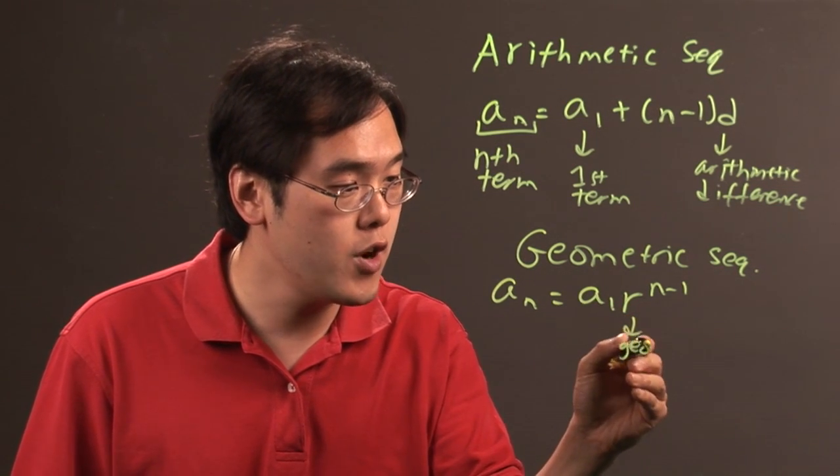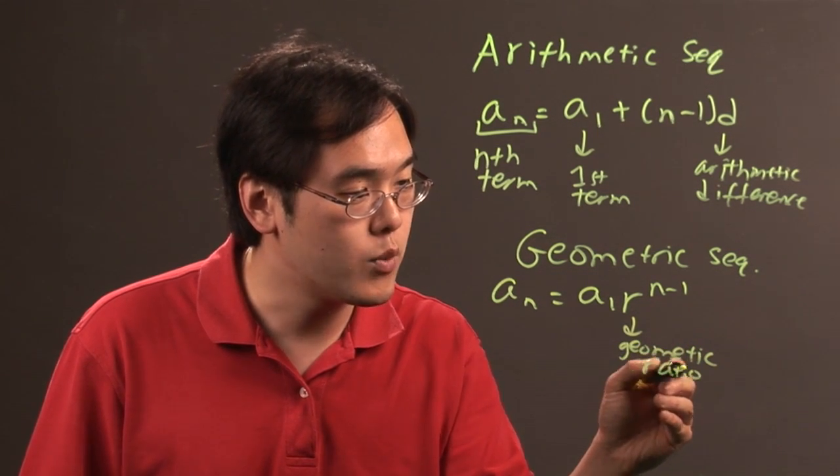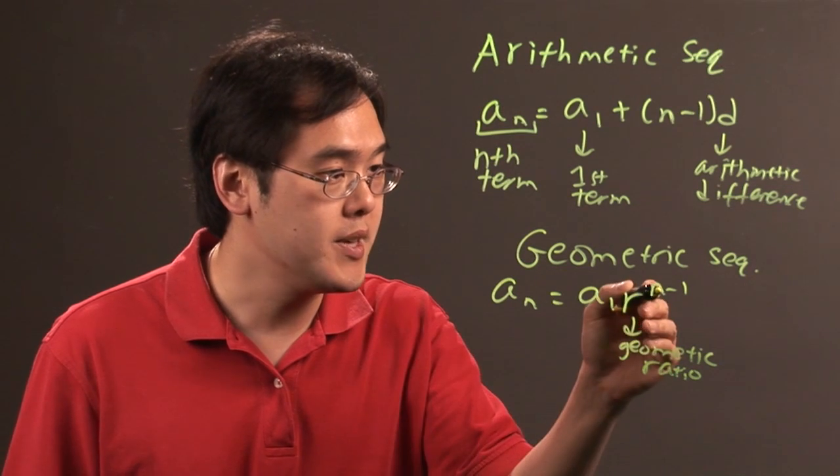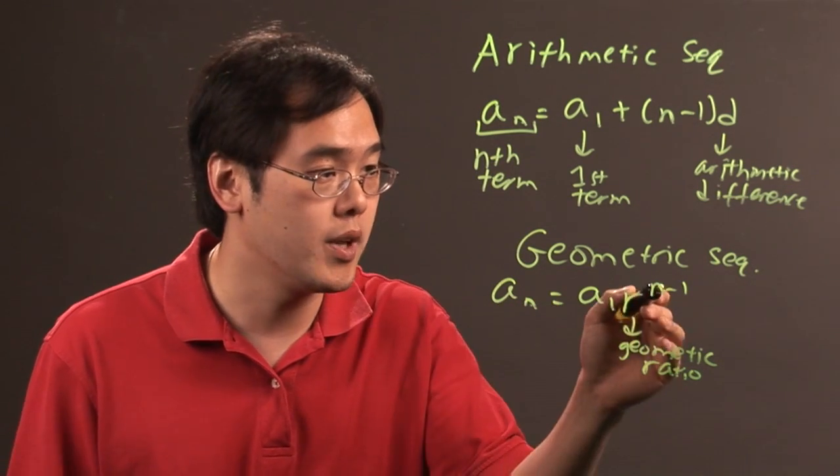r is known as the geometric ratio. In other words, the number that separates the terms via multiplication or division. And this n is related to this n. So, if you want to find the eighth term of the geometric sequence, you plug in 8.